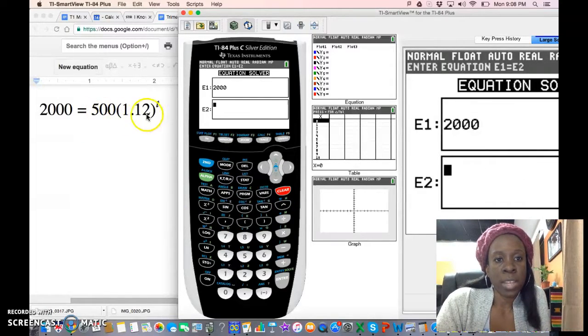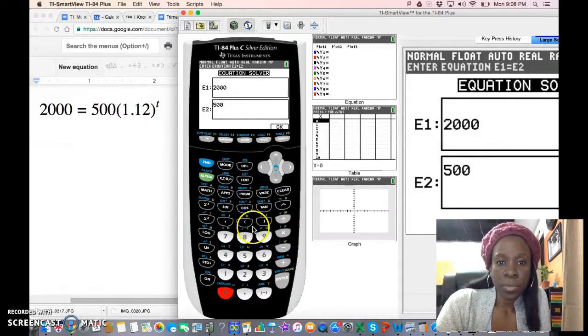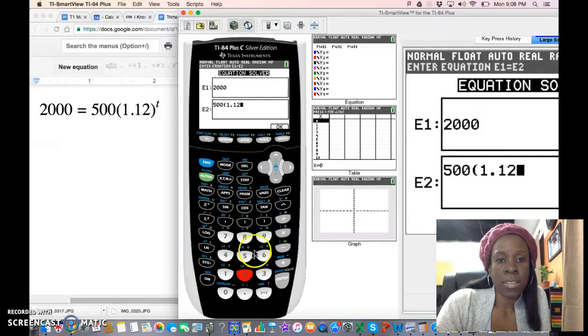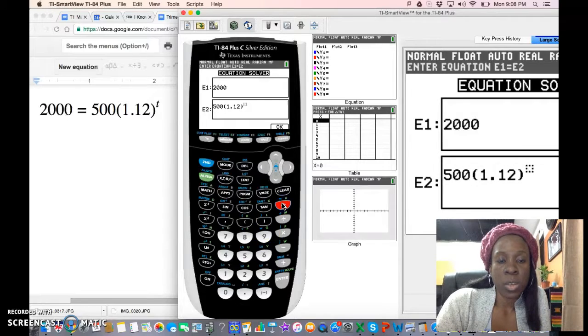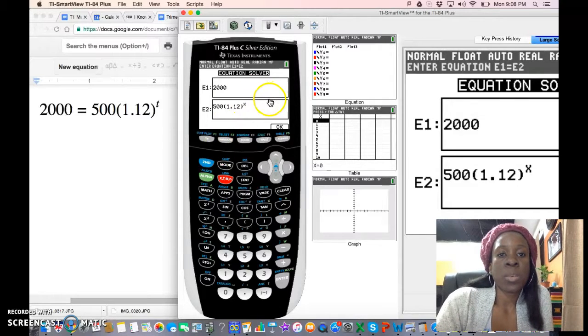I'm going to type the second expression from the right side of the equation here. So we have 500 times 1.12, so I'm just typing exactly what I see. Caret, so that's how you raise something to a power, and that's my x. I can use x instead of t, that's fine.